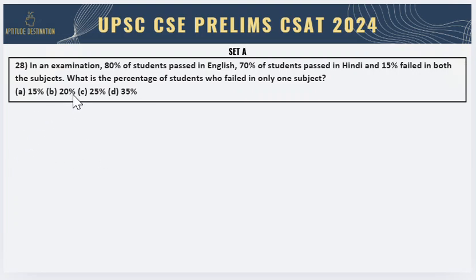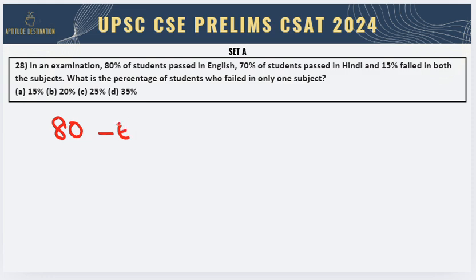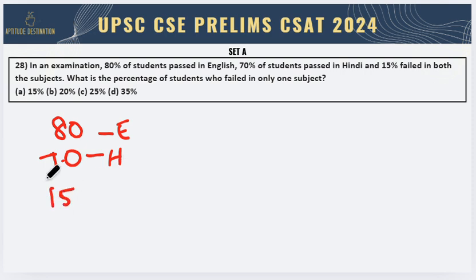Please pause the video and read the question completely. In an examination, 80% of students have passed in English and 70% of students have passed in Hindi, and 15% have failed in both subjects.